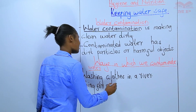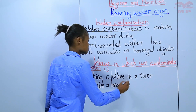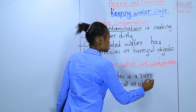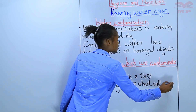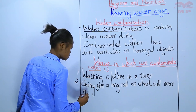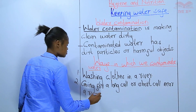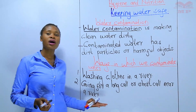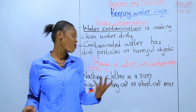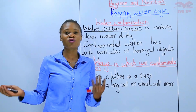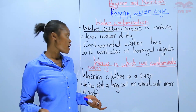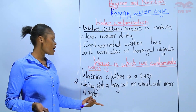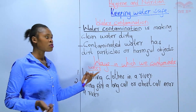Another way in which we can contaminate water is going for a long call or short call near a river. We are not supposed to go for our short calls or long calls near a river; instead, make sure you are using the toilet or the urinal. Urinals are used by boys and men. Going for a long call or short call near a river is a way of contaminating water.